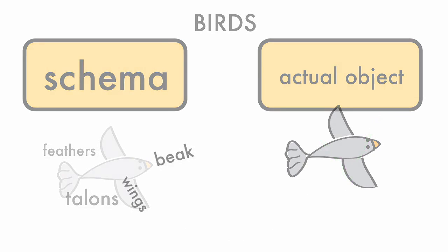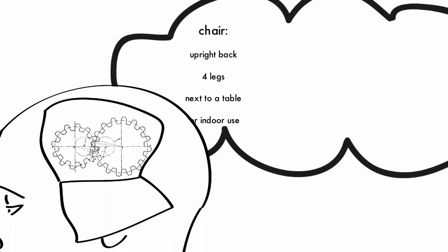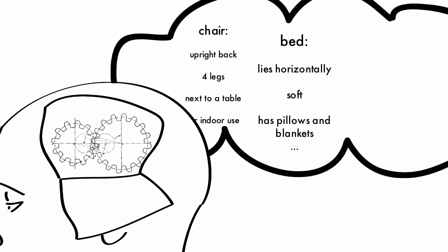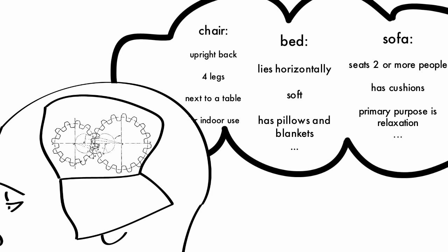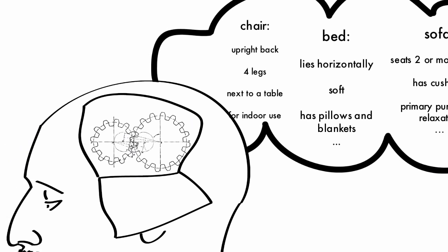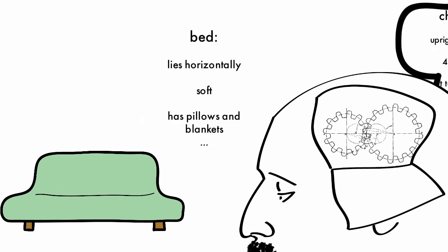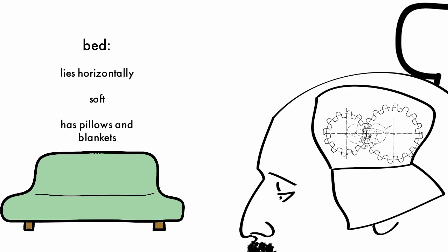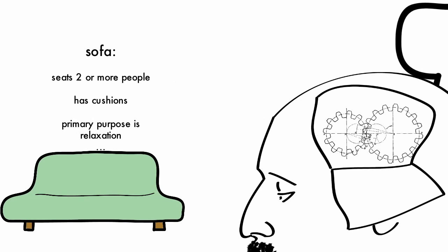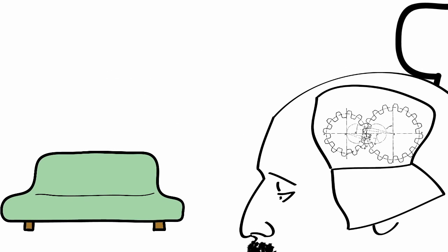Here's an example. You have a schema for a chair, a bed, and a sofa. The first time you see a futon, you immediately search your stored schema to see if it fits with anything you have already encountered.